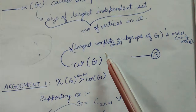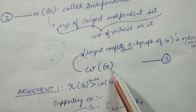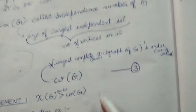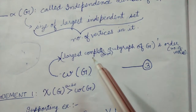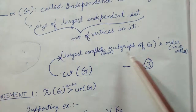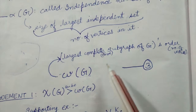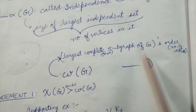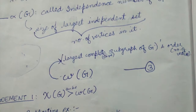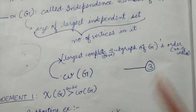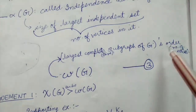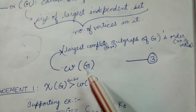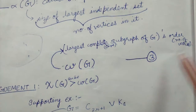The third notation is ω(G). So we have: first χ(G), second α(G), then ω(G). Omega G represents the order of the largest complete subgraph of G — that is, the largest subgraph of G which is a clique. We take its order, meaning the number of vertices in that subgraph. That is ω(G).